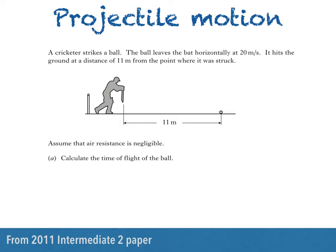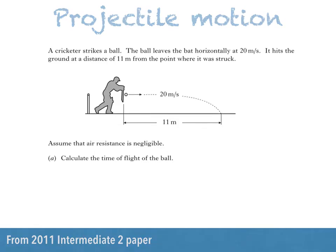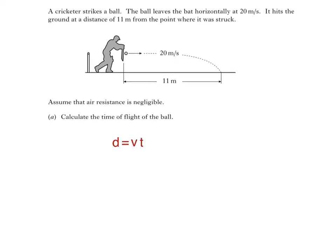To work at the ball's time of flight, we know how far it's moved horizontally and its horizontal speed, which is constant. So, once we give ourselves a little more space to work at the answer, we can use this equation and rearrange to make time t the subject by dividing both sides by speed v.